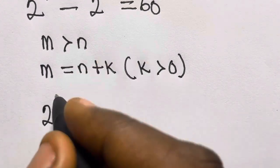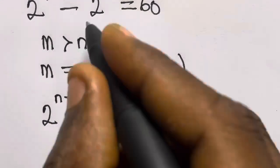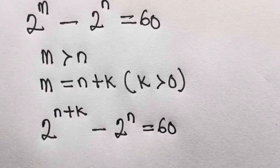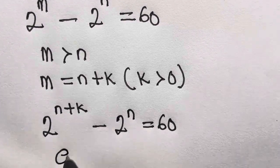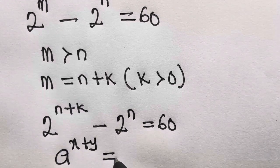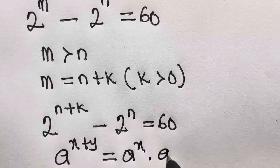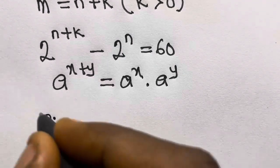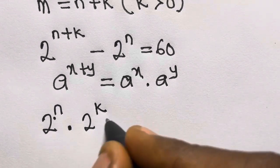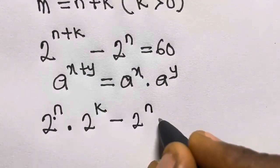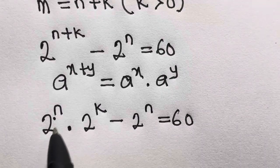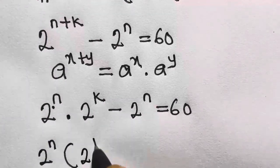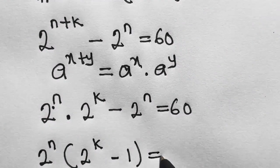If we let M equal N plus K, we have 2 raised to the power N plus K, minus 2 raised to the power N, equals 60. Recall that A raised to the power X plus Y equals A raised to the power X times A raised to the power Y, from the law of indices. So the expression becomes 2 raised to the power N times 2 raised to the power K, minus 2 raised to the power N, equals 60. Factoring out 2 raised to the power N gives us 2 raised to the power N times the quantity 2 raised to the power K minus 1, equals 60.